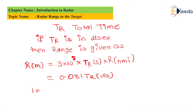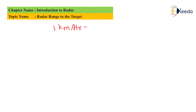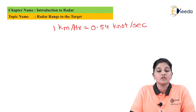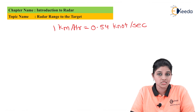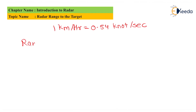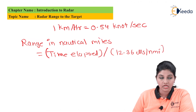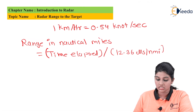One nautical mile equals 1.851852 kilometers, and 1 km/h equals 0.54 knots per second. Nautical miles are a convenient unit used in communication system applications. So in terms of nautical miles, the radar range is found using the formula: range equals time elapsed divided by 12.36 microseconds per nmi.